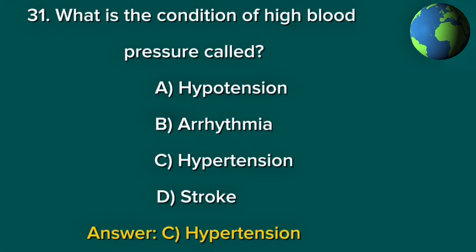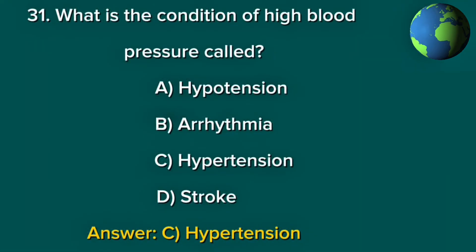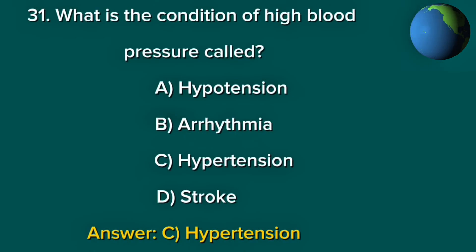Question 31. What is the condition of high blood pressure called? A. Hypertension. B. Arrhythmia. C. Hypotension. D. Stroke. Answer: C. Hypertension.